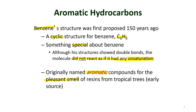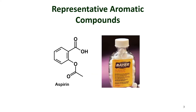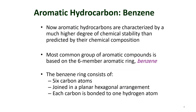A few examples of aromatic compounds include the very commonly used drug aspirin. Its structure shows the six-carbon ring of benzene plus some attached atoms. This is what the aspirin structure looks like, and it is a type of aromatic compound.